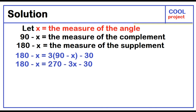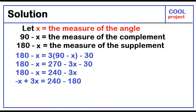Simplify. 3 times 90 is 270. 3 times negative x is negative 3x. The equation becomes 180 minus x equals 270 minus 3x minus 30. 270 minus 30 is equal to 240. 180 minus x equals 240 minus 3x. Simplify using the properties of equality: negative x plus 3x equals 240 minus 180. 2x equals 60. Divide both sides by 2. x equals 30.